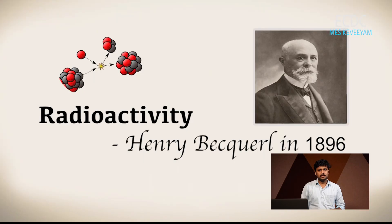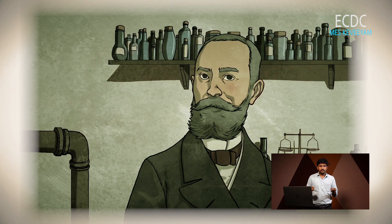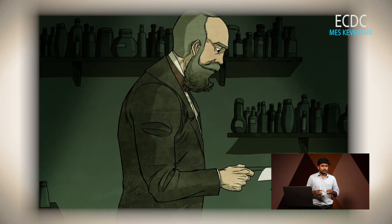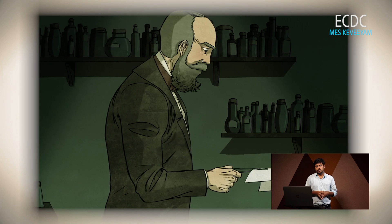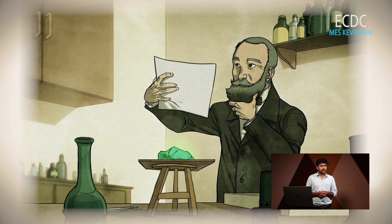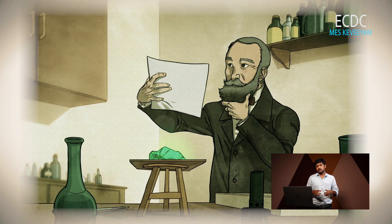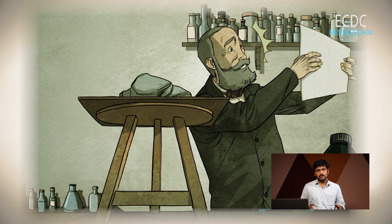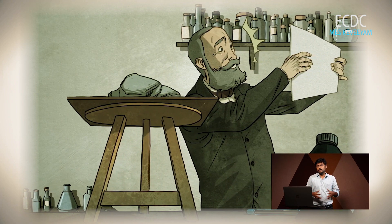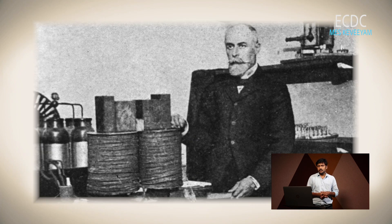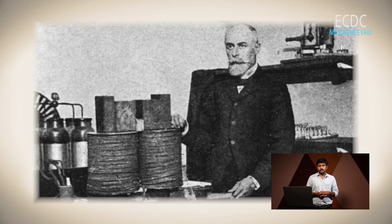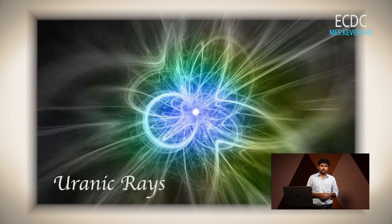Radioactivity was discovered by Henry Becquerel in 1896. He kept uranium salt with a photographic plate in his cupboard and found that the photographic plate got exposed even in the absence of light. He repeated the experiment several times and confirmed that there are some rays which originate from uranium salts that affect the photographic plate. He called the rays uranic rays.